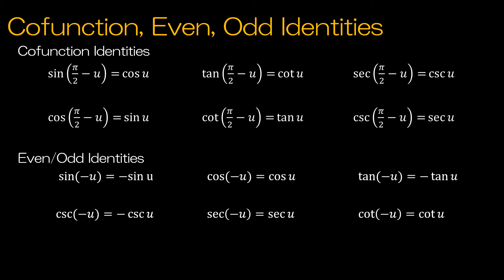Next we have the co-function identities. This means that co-functions — which are sine and cosine, tangent and cotangent, or secant and cosecant — evaluated at complementary angles are going to be equivalent. Complementary means adding to 90 degrees or pi over 2, so for instance the sine of 30 degrees equals the cosine of 60 degrees, because those are complementary angles and sine and cosine are co-functions.